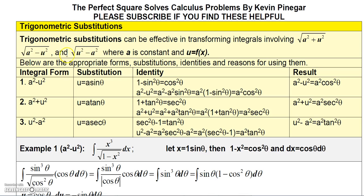In this section, we're going to talk about trigonometric substitutions. These types of substitutions can be effective when you have integrals involving the form square root of a squared plus u squared, square root of a squared minus u squared, and square root of u squared minus a squared, where a is simply a constant and u is some function of x.